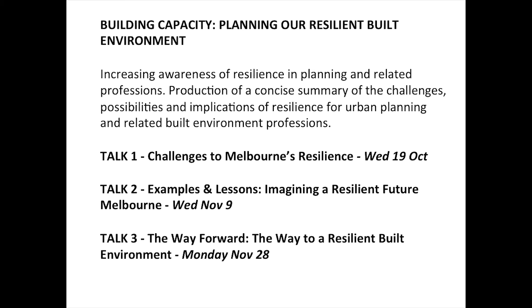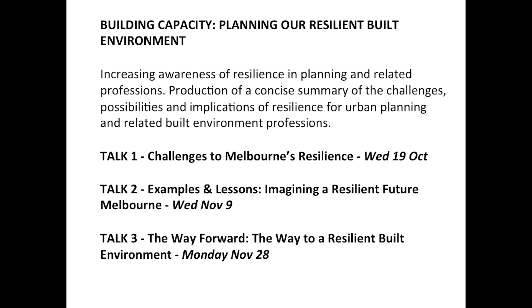Talk one was in a sense the doom and gloom of resilience — what are the shocks? We talked about fires and floods and these sorts of things, but we also started talking about some of the non-traditional threats to human settlements: the end of oil, low-carbon cities, heat waves, economic breakdown and so on. This talk — Examples and Lessons, or Imagining a Resilient Future — is starting to think about what are the good things about resilience, what are the ways forward, what are some examples.